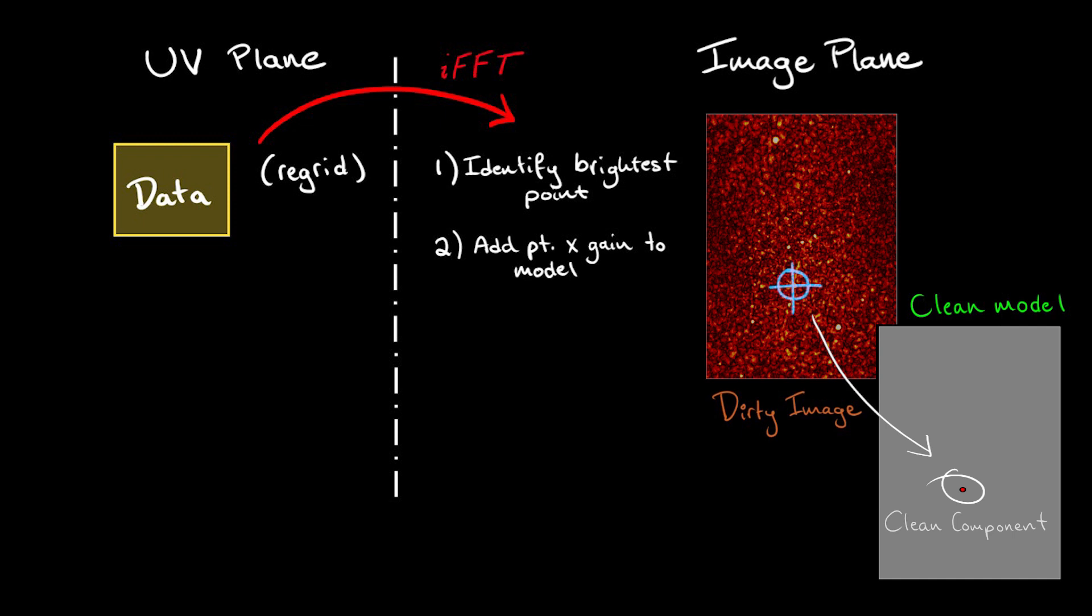The amplitude of this component is equal to the brightness at that location in the map multiplied by a gain factor of less than 1, to account for the fact that in the real map, the brightness at that location is most likely the contribution of multiple sources plus noise.